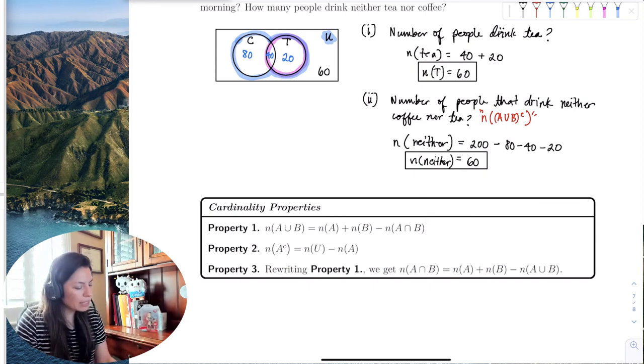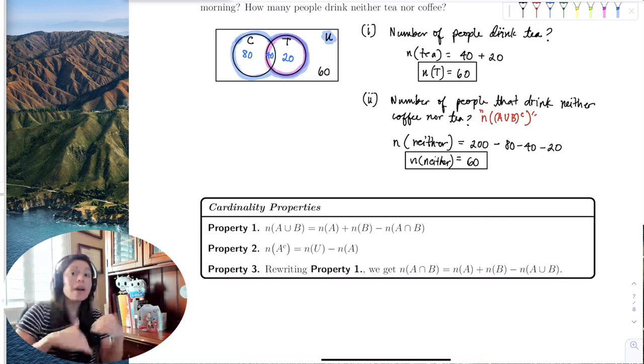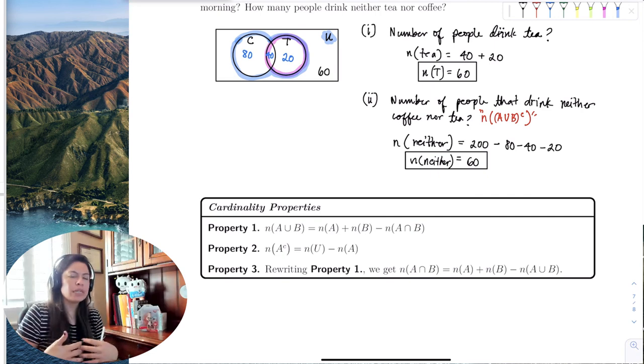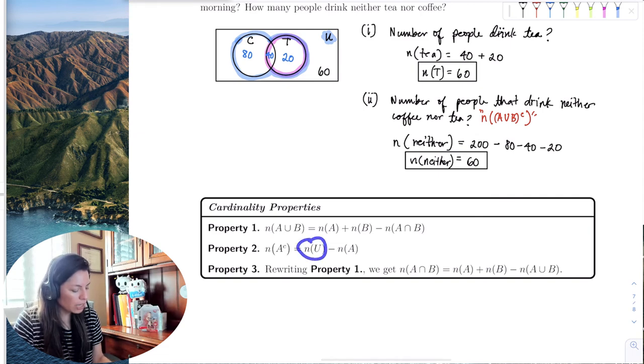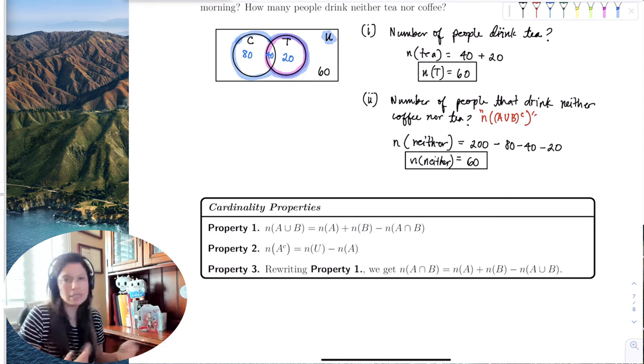So we can't say, oh, 120 is here and 60 is here, because then you're taking those intersections twice. So we can't double dip. So you just add the elements up and subtract the intersection once, so that way you're not double dipping. The complement is exactly what we did here. You just take the total number in your universe set and subtract however many elements in that set.